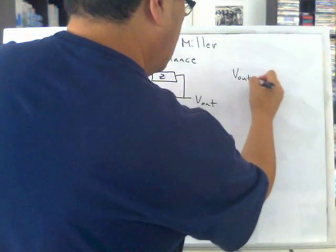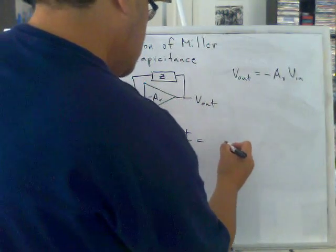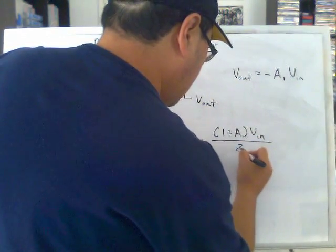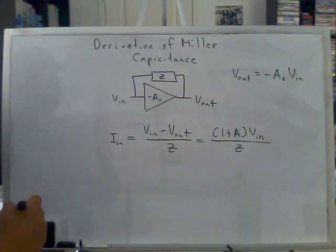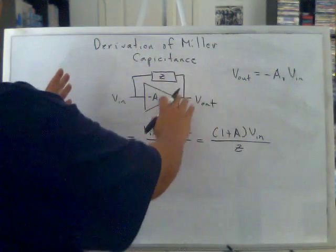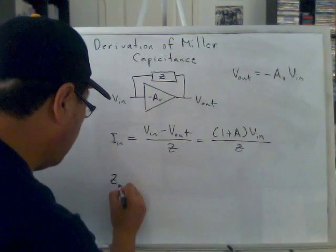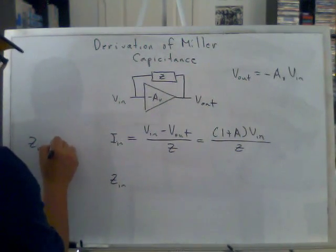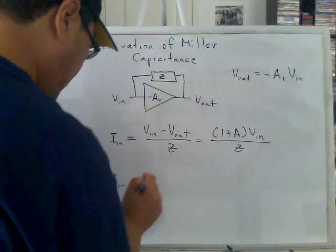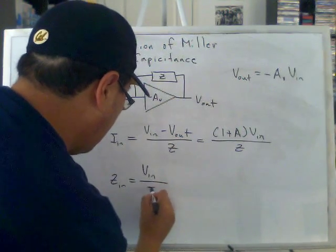We know that V out equals negative Av times V in right here, so we will have 1 plus Av over Z. Now, if we're going to calculate the input impedance of this feedback connected amplifier, we will define Z input. Please note that Z in is not the same as this Z. The input impedance is not the same as this Z.